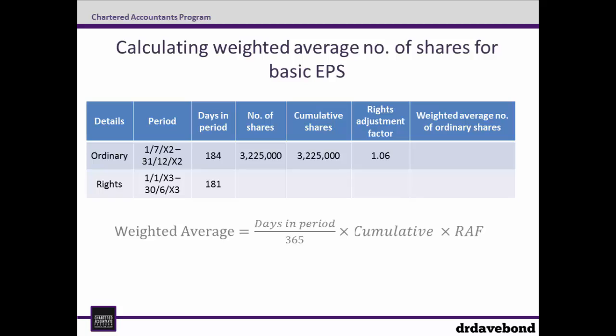The final column — the weighted average number of ordinary shares — is the days in the period divided by 365, multiplied by the cumulative shares in the row, and multiplied by the rights adjustment factor. This yields 1,723,299.